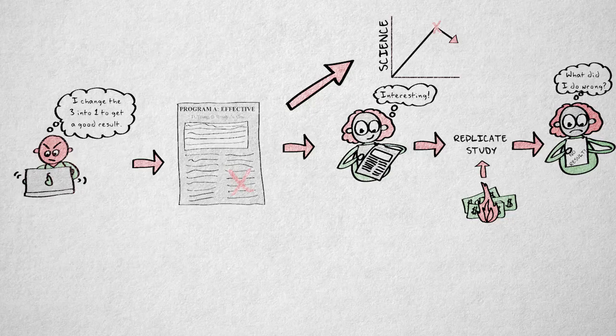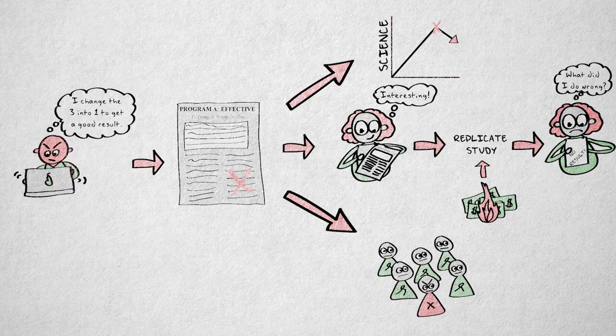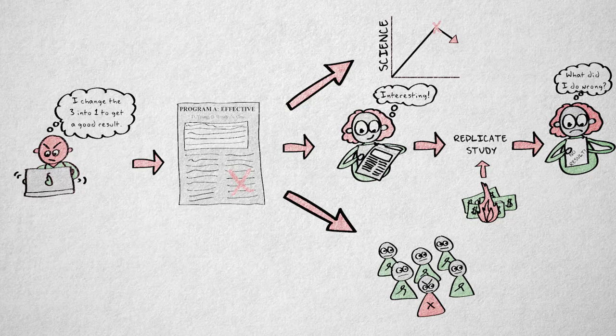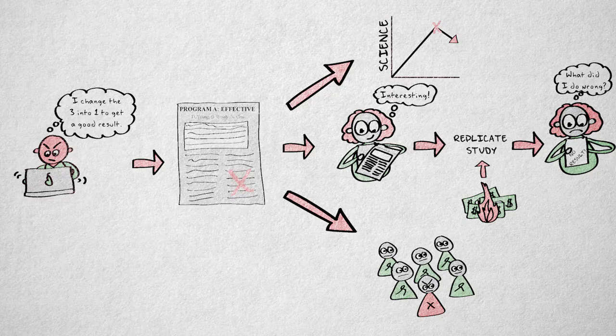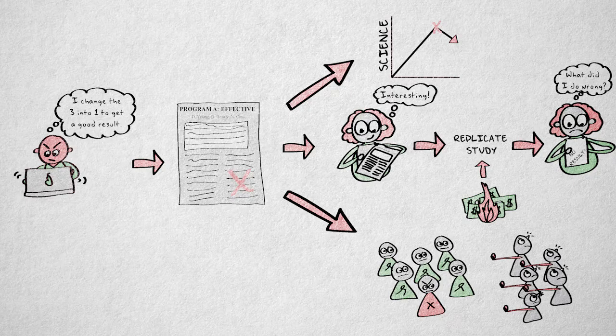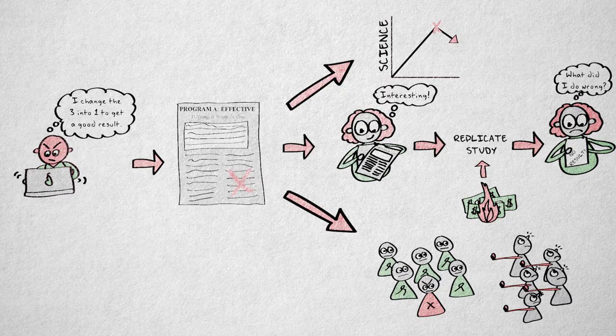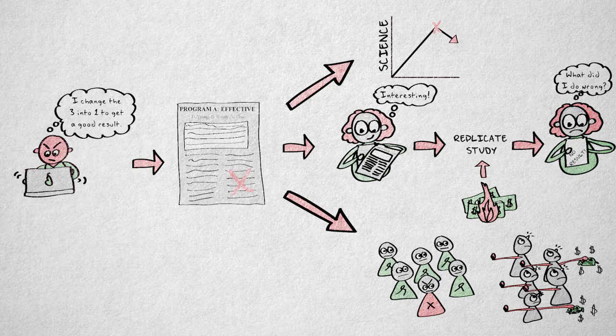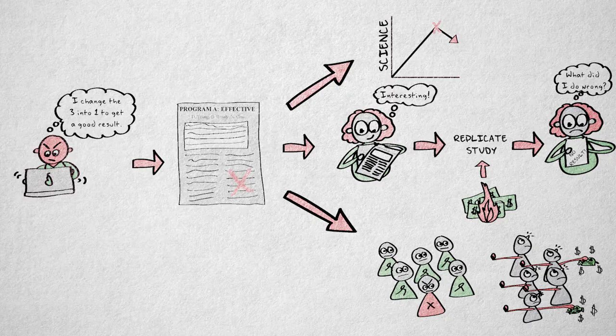Thirdly, once fraud is exposed, the reputation and credibility of the field, including the majority of researchers who do have integrity, is severely damaged. This can result in more difficulty to obtain funding in a general area where fraud has been exposed. This puts honest researchers who have the bad luck to be in a related field at a disadvantage.